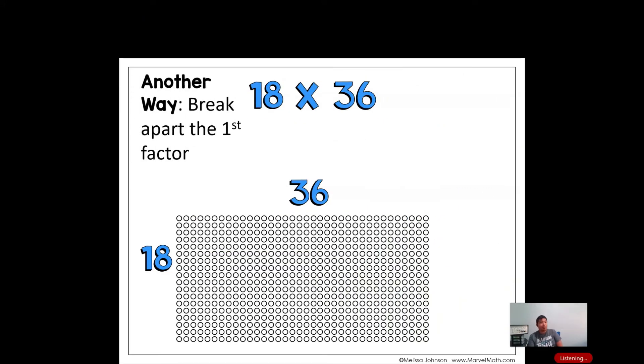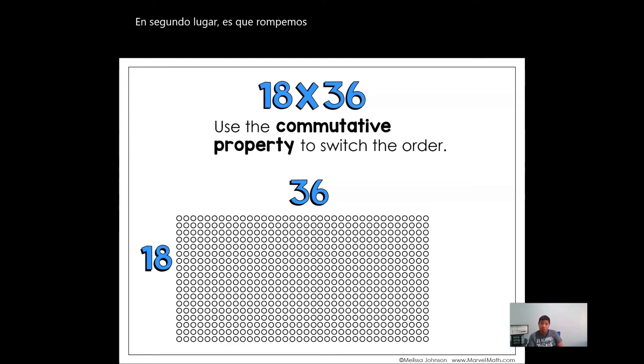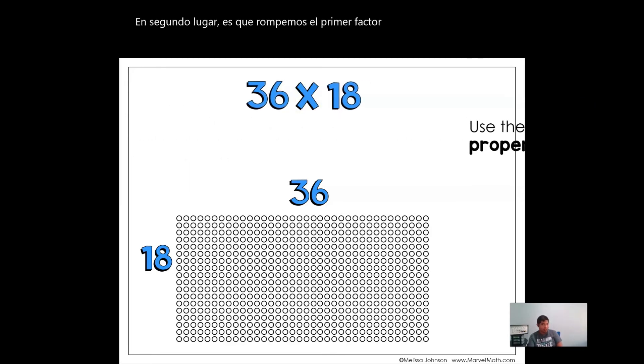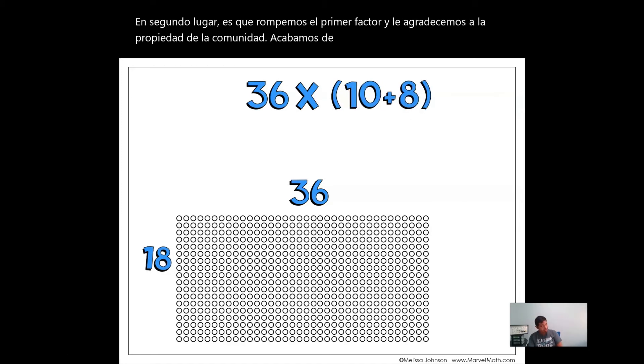Second way is we break up the first factor. And thanks to the commutative property, we just switch the orders. Excellent. Now 18 turns into 10 plus 8.